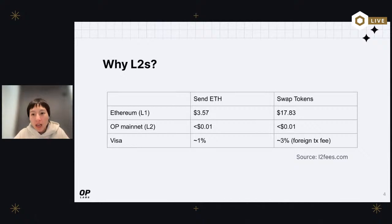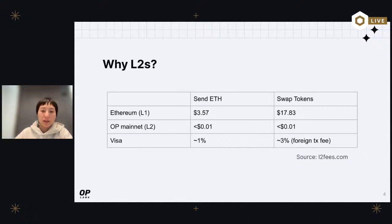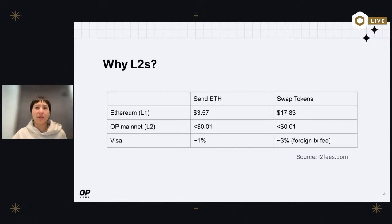Since L1 is only responsible for storing the commitment to that compute, the cost is significantly smaller because you're expensing fewer computational resources, resulting in cheaper transaction fees. That's essentially what an L2 is. If we're trying to compete with Visa or Mastercard in the future, transaction fees need to be low, and the way L1 is today is just not going to be low enough for that to work.